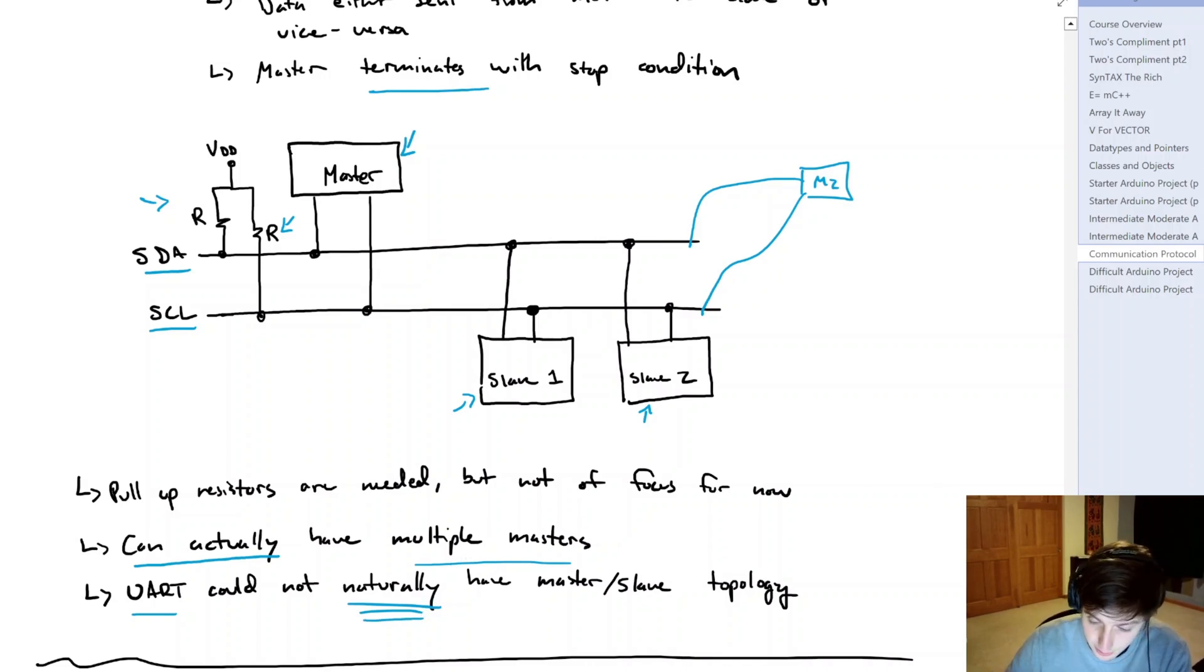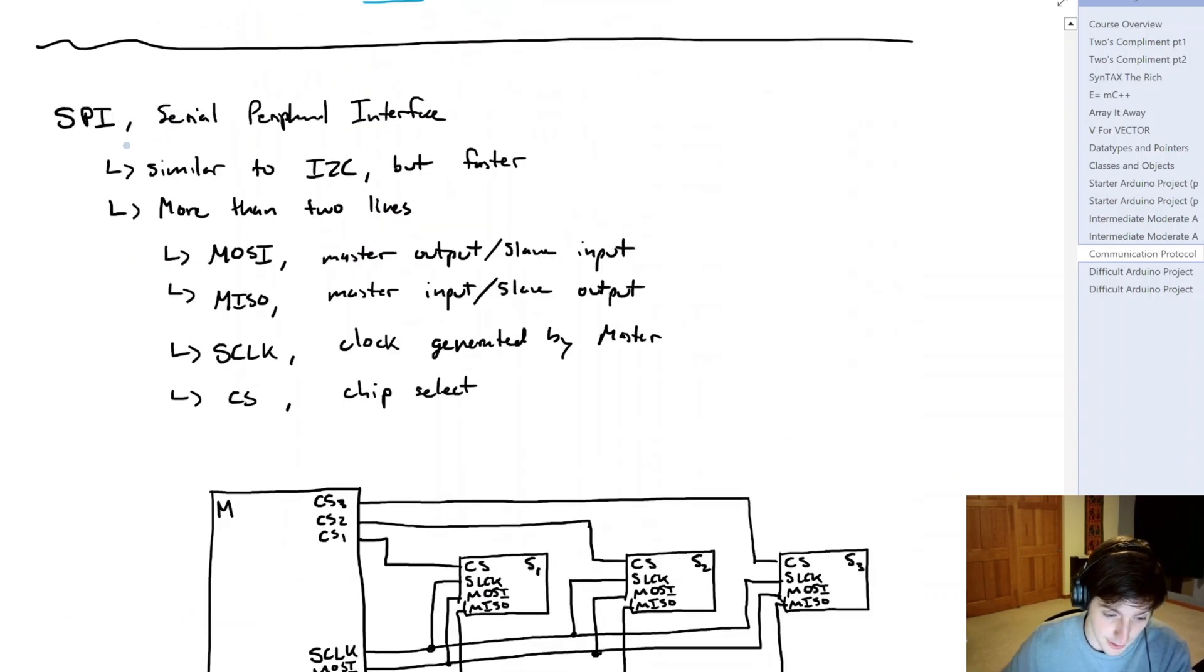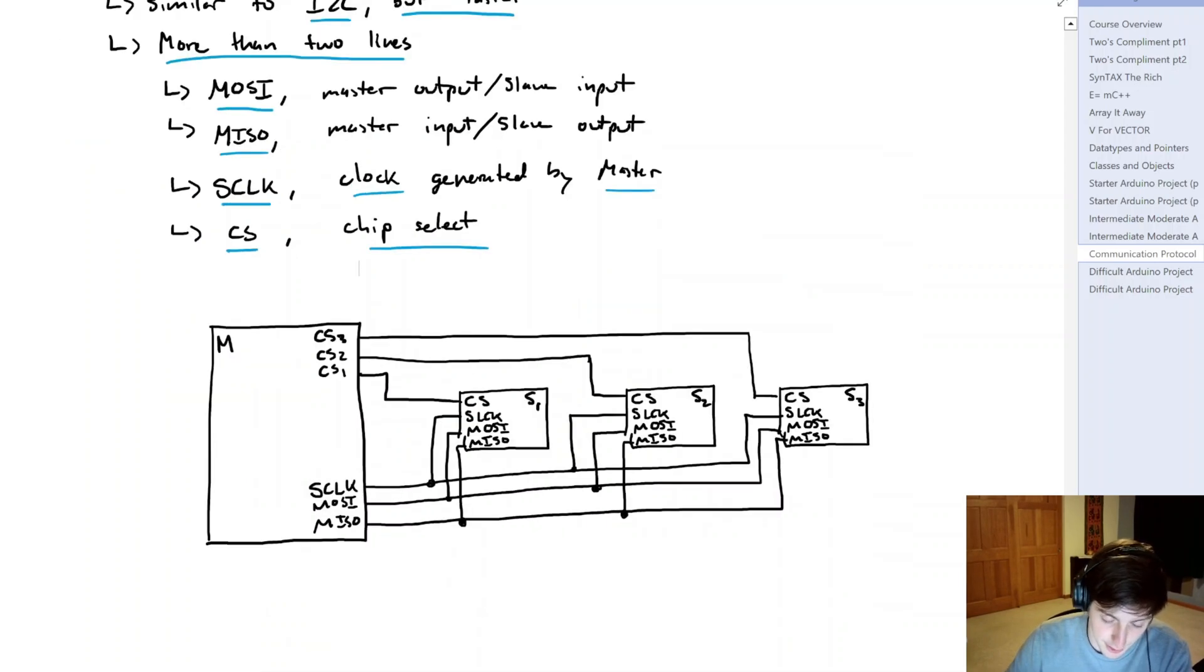And this will bring us into our last communication protocol, which will be the SPI protocol, or serial peripheral interface. So we have more than two lines. And those consist of MOSI, which is master output, slave input, we have MISO, so master input, slave output. We have SCLK, which is a clock that's generated by the master. And then we have CS, which is chip select.